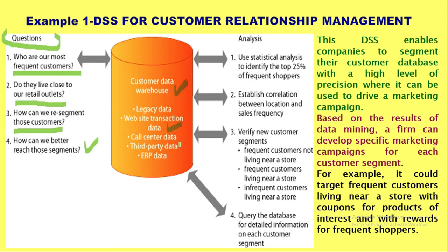The data warehouse also holds third-party data and ERP data. Once the DSS works, it statistically analyzes and lists the top 25 frequent shoppers, then establishes correlations between customer location and sales frequency so that potential customers in particular locations can be reached more frequently.